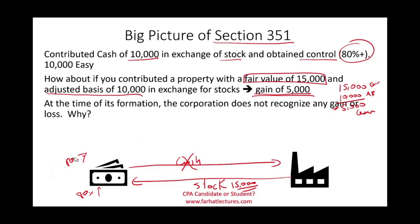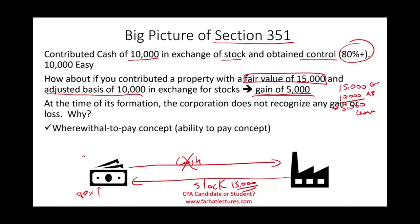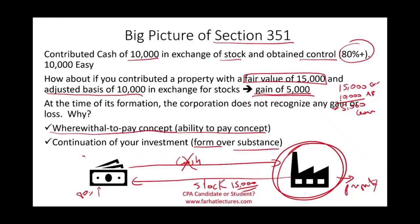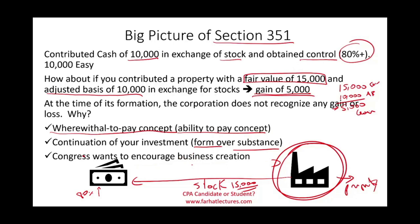Why do these rules apply? First, if you obtain stock in return, you can't pay the IRS with stock — this is called the 'wherewithal to pay' concept. You received stock, not money. Also, after contributing the property to the business, the property is still effectively yours — there's a continuation of your investment. You transferred it to your business, so it's form over substance. You still own the company that owns the property, so your position didn't really change.